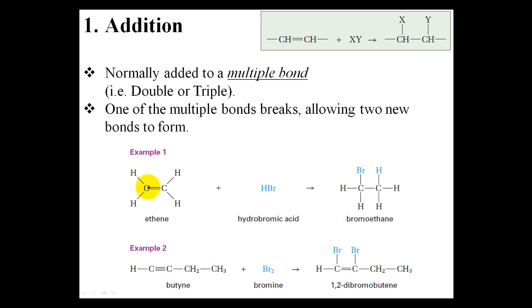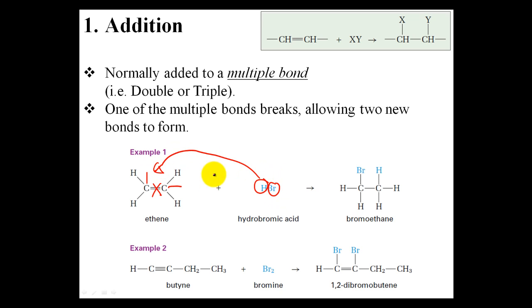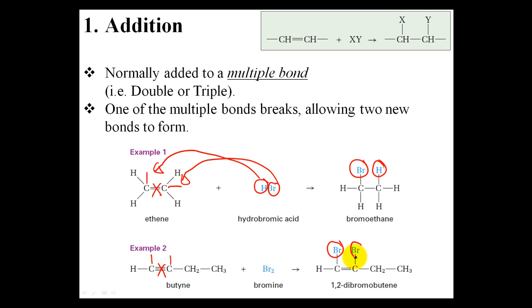Normally carbon can only form four bonds. However, when one of the multiple bonds is broken, you are freeing up a bond site, allowing carbon on either side of the double bond to add on an extra element or functional group. In this case, the hydrogen and the bromine can be tacked on to either of these two carbons.